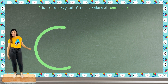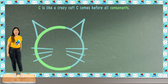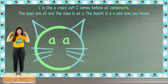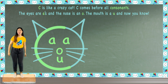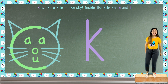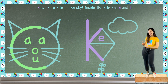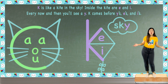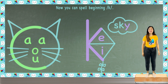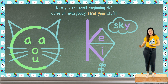C is like a crazy cat. C comes before all consonants. The A's and the O's and the U's — C comes before a, o, and u, and now you know. K is like a kite in the sky. Inside the kite are E and I. Every now and then you'll see a Y. K comes before Y's, E's, and I's. Now you can spell beginning 'kuh' — come on, everybody, strut your stuff!